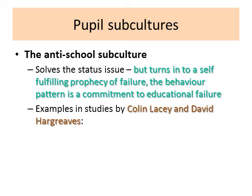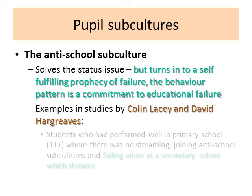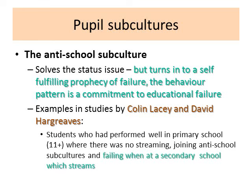We find supporting evidence in studies by Lacey and Hargreaves. Students who had performed well in primary school — up to the 11+ where there was no streaming — often joined anti-school subcultures and failed when at secondary school they were streamed. So in a primary school with no streaming, these students might do very well, but once placed in the bottom groups at secondary school, they did not do so well.